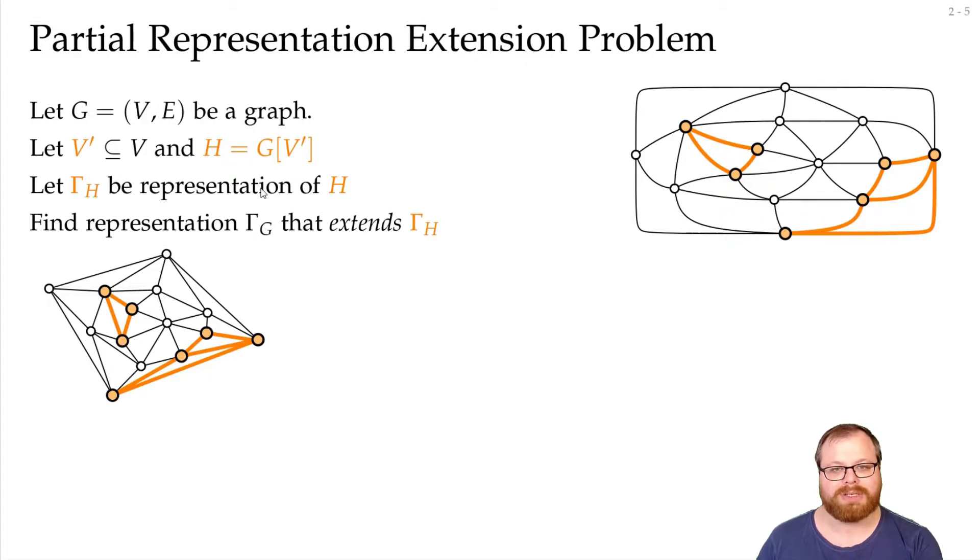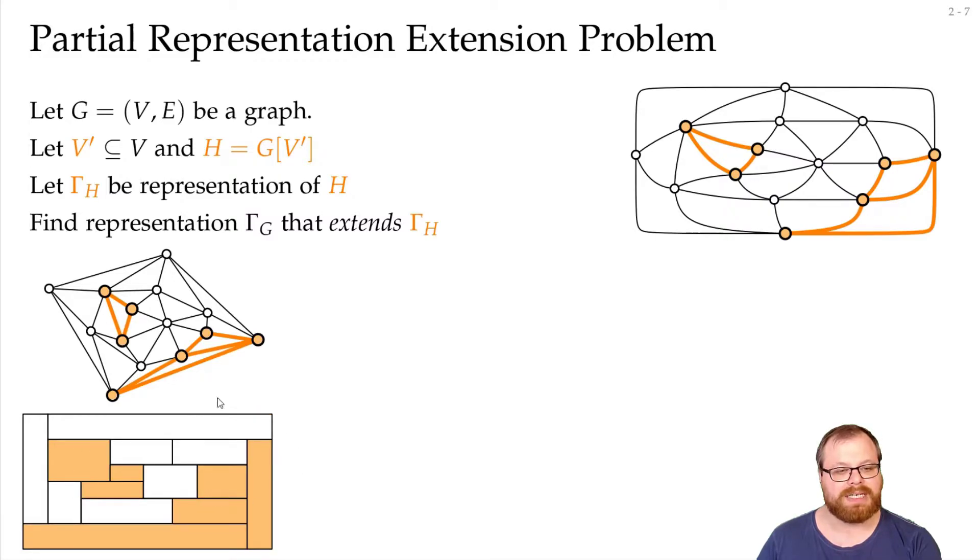This is what's called an extension of this representation. Of course we don't have to do this for straight line drawings. We can do this for any type of representation that we want. For example for the rectangular duels that we had in the previous lecture. Here all these seven vertices are already represented by some rectangle. And we want to find placements of the other vertices' rectangles so that we get a rectangular duel of the graph.